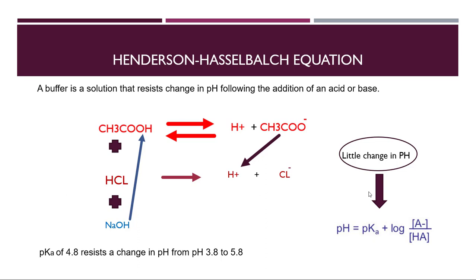For example, if the pKa value of the acetate solution is 4.8, and we add HCl or NaOH, the pH change will range from 3.8 to 5.8.